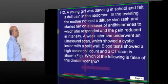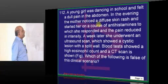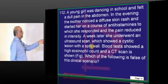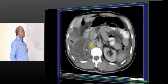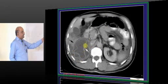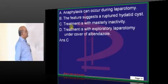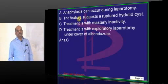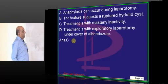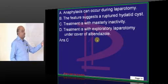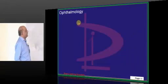A young girl dancing at school felt a dull pain in the abdomen. There is a diffuse skin rash, and a week later imaging showed a cystic lesion with a split wall — a classical ruptured hydatid cyst. At laparotomy you must be careful of anaphylaxis. Expeditary laparotomy under the coverage of albendazole is the management of choice for a ruptured hydatid cyst.